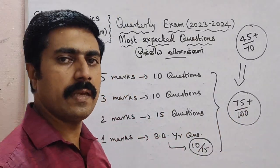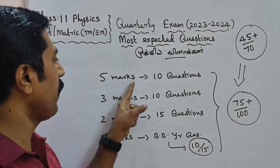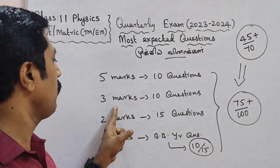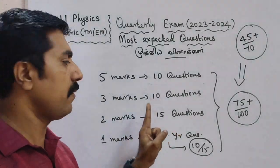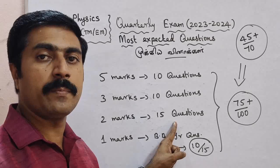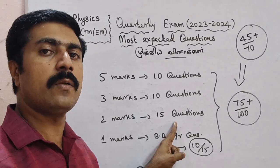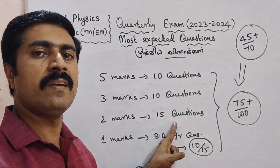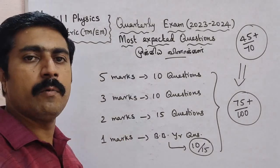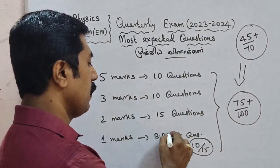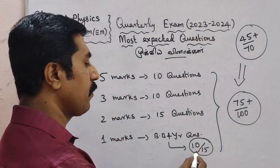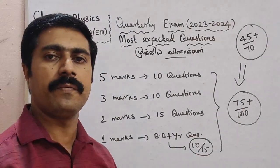There are many questions. 5 marks will be 10 questions. 3 marks will be 10 questions. 2 marks will be 15 questions. 12 marks will be 15 questions. For 1 mark questions, you will have bookbag questions plus previous year question papers — 1 mark bookbag will be 15 questions.